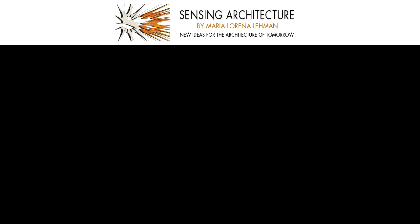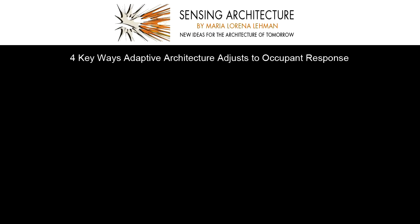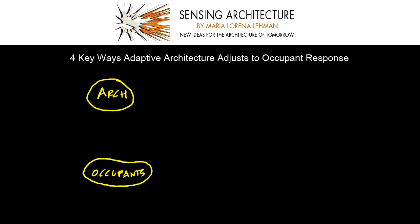In this micro lecture, I'm going to teach you four key ways adaptive architecture adjusts to occupant response. As you can see here, we have architecture and we have occupants. As occupants engage within the architecture and embark upon their experiential journey within the built environment, the architecture itself can respond to occupant behaviors.